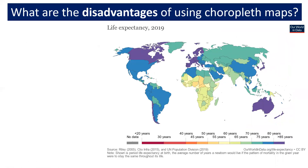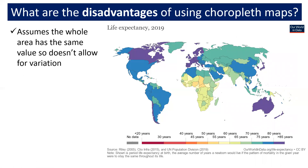But there are some really big disadvantages about using choropleth maps. The first one is that it assumes the whole area has the same value and therefore doesn't allow for variation. For example, looking at Canada, we can see it has a life expectancy of over 85 years on average. But does that mean that everybody in all different parts of Canada lives to the same life expectancy? The answer is no — some parts of Canada may have a lower life expectancy and others may live beyond 85. But from this map it's very hard to work out that information.